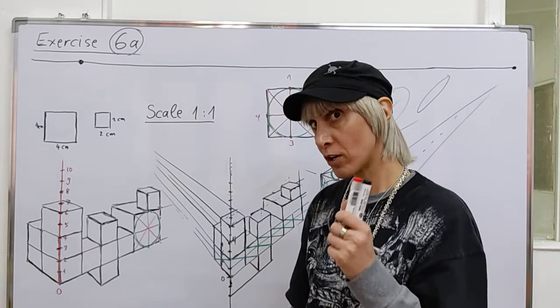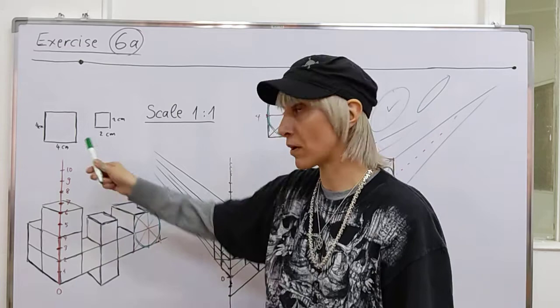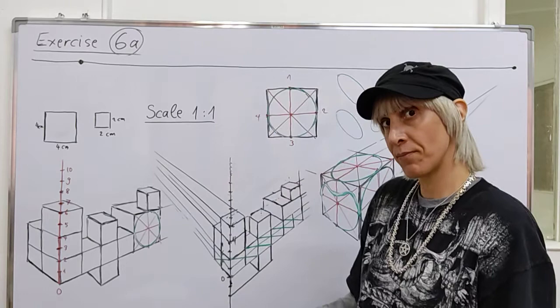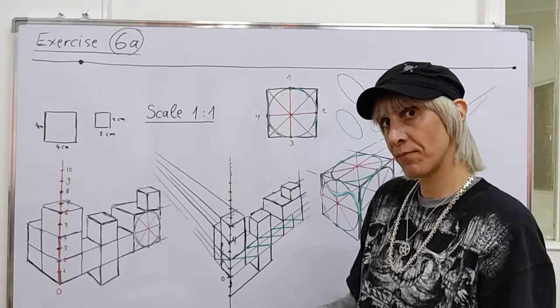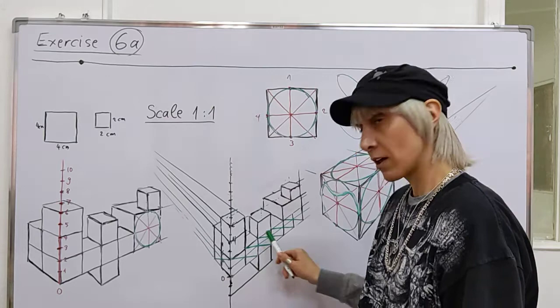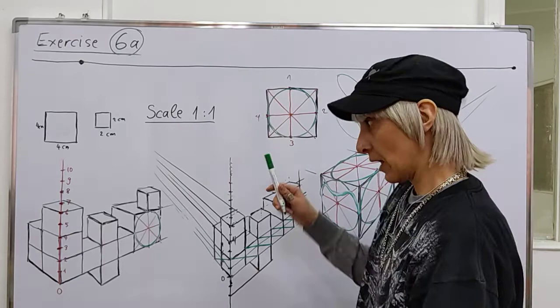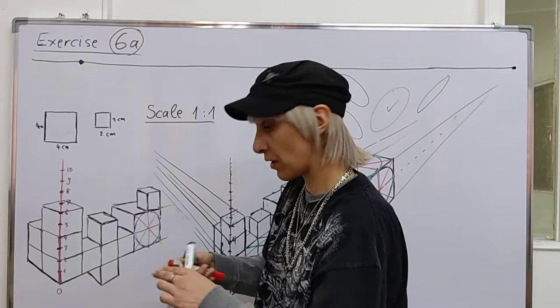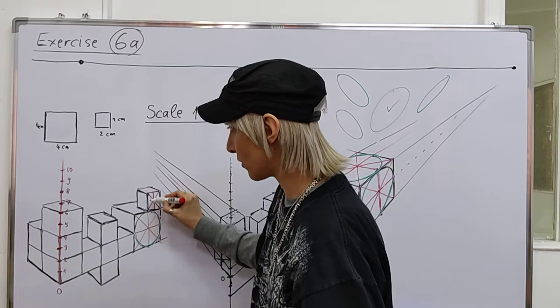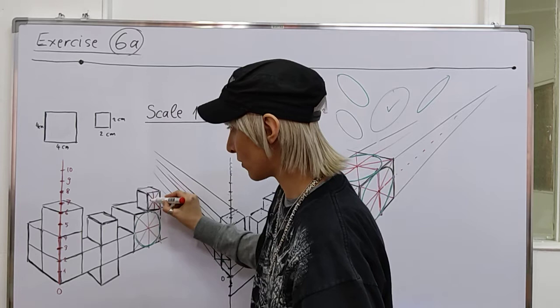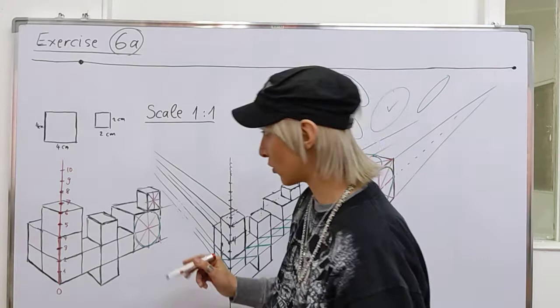Your homework is to draw this object exactly - small cubes 2x2x2 cm and a big cube 4x4 cm, scale 1 to 1, using the division of the cube method. I need to see these construction lines showing you used the method correctly. Then draw the circles on all visible faces according to the technique described. For each small cube face, draw diagonals, the center line to the vanishing point, and draw the circle through the four points.